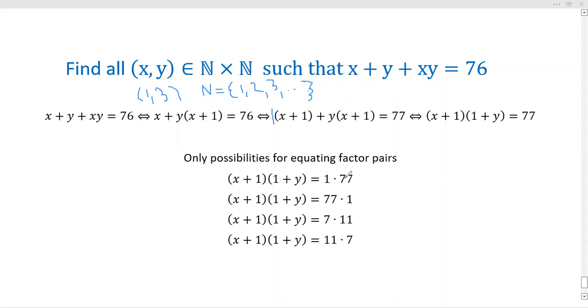77 has four factor pairs and we have to consider the order here because this is an ordered pair. The only factor pairs of 77 are: 1 × 77, 77 × 1, 7 × 11, and 11 × 7.